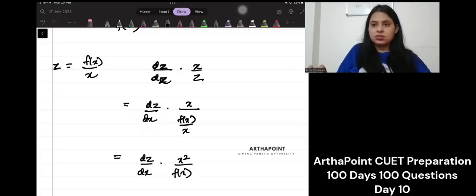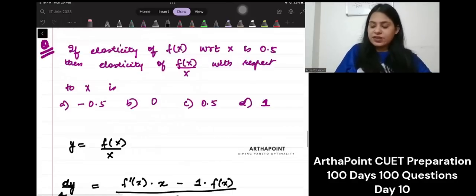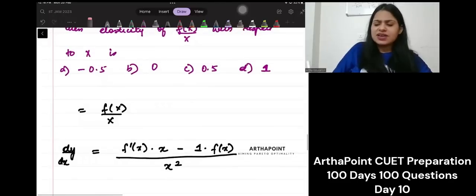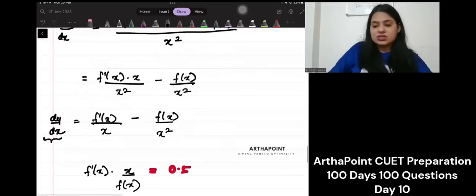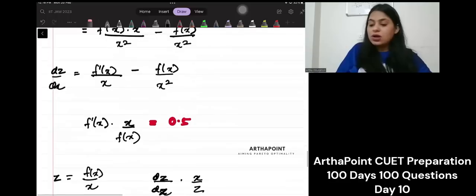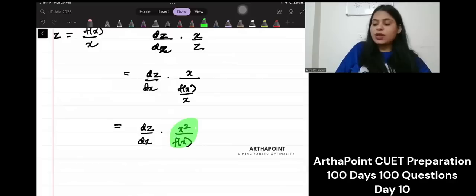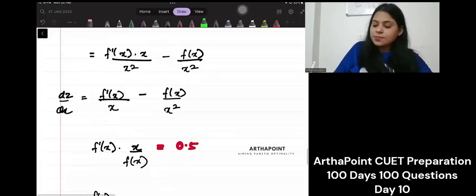This is what I want to find out. So, basically, if this is my y or this is my z, whatever function you want to call it, we have already differentiated this function with respect to x and we have found this. Now, in order to solve this further, in order to find elasticity, what am I required to do? I am required to multiply both sides by x square by fx.